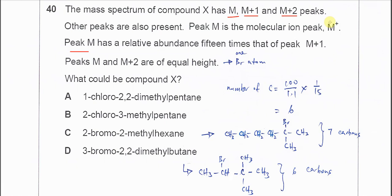The mass spectrum of compound X has M, M+1, and M+2 peaks. The M peak has a relative abundance fifteen times that of the M+1 peak.